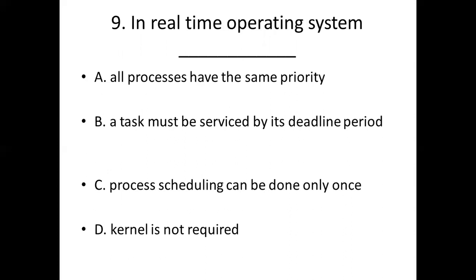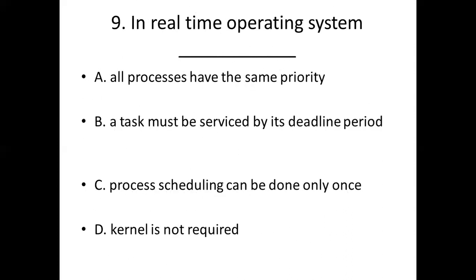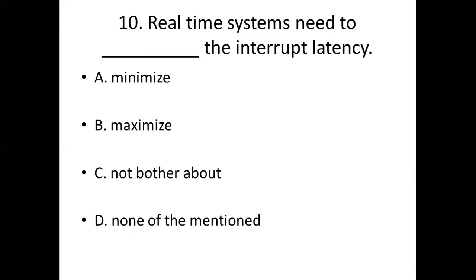Question 9: In real-time operating system — Option A: all processes have the same priority. Option B: a task must be serviced by its deadline period. Option C: process scheduling can be done only once. Option D: kernel is not required. Answer: Option B, a task must be serviced by its deadline period.